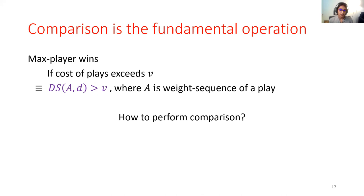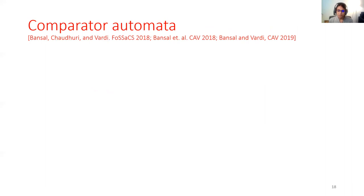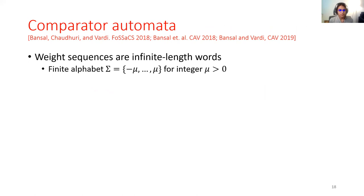This is some work that I have been doing for the past several years in the form of comparator automata. The idea here is to convert the comparison problem into a problem on automata. The treatment of weight sequences under comparator automata is that every weight sequence is simply an infinite length word. So, if the weight sequences are bounded by a value mu, then we can think of weight sequences as infinite words over the finite alphabet, ranging from minus mu to mu.